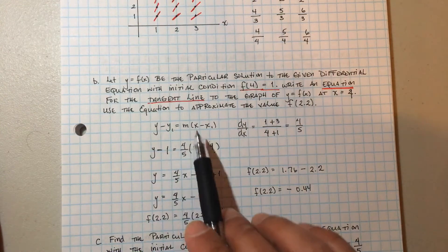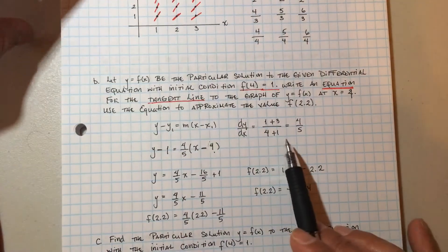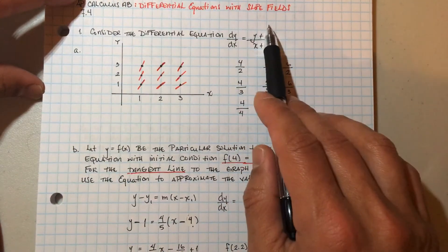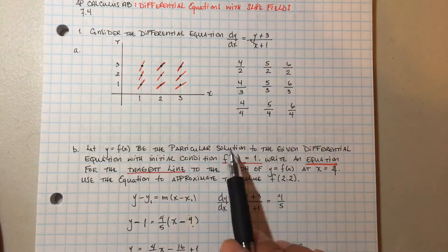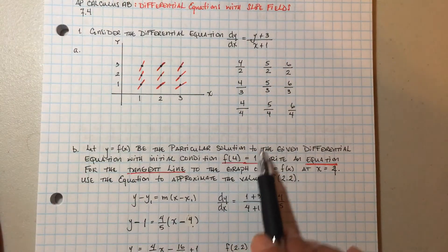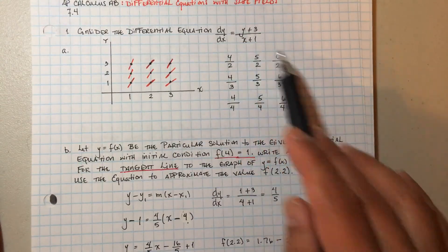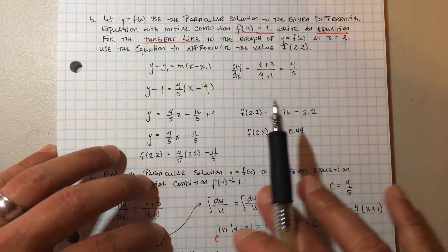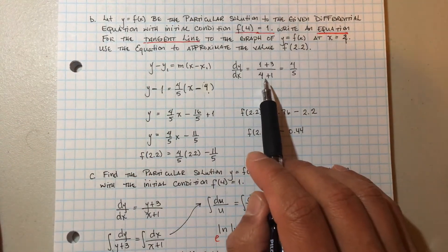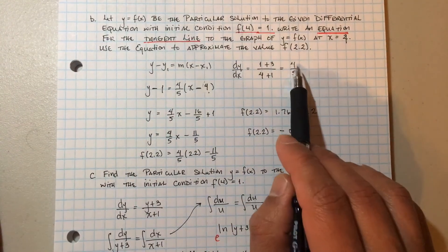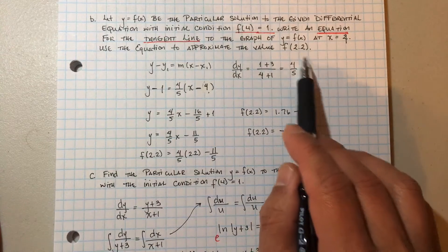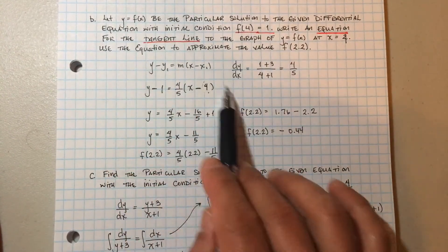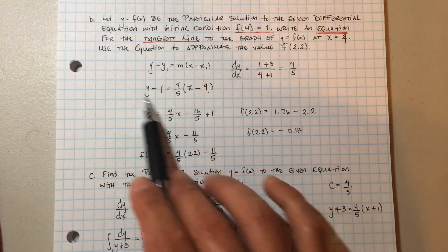The slope comes from your differential equation. You plug in the initial condition x = 4, y = 1, and that gives you the slope at that particular point — which is 4/5. That value goes into the tangent line equation, and this is your equation of the tangent line at that point.